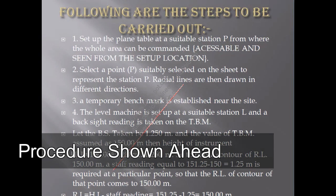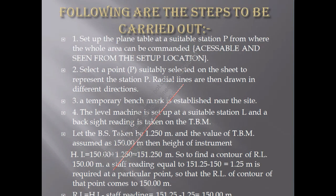We establish a benchmark nearby with the help of a leveling machine and take the benchmark assuming it to be 150 meters or as required. With reference to that we will proceed, and this station where we place the leveling machine is at L. The point at which the table was put was at P and the point at which the leveling machine is placed is L.